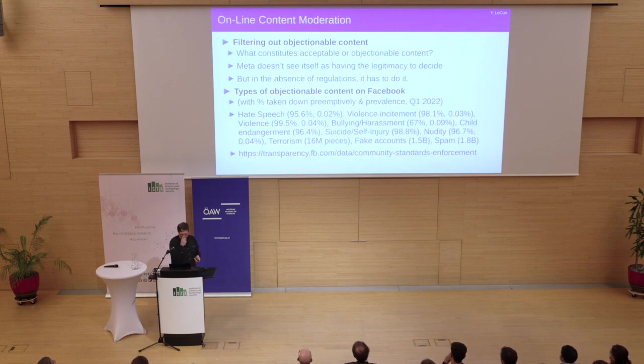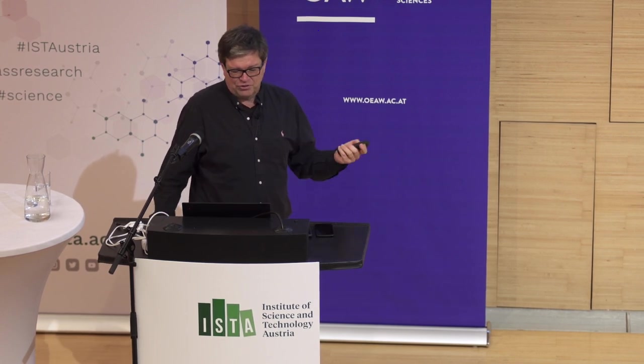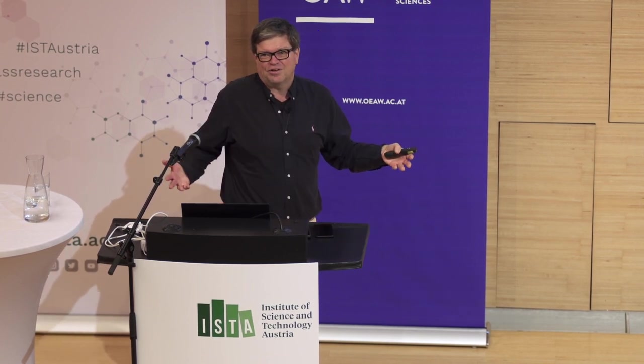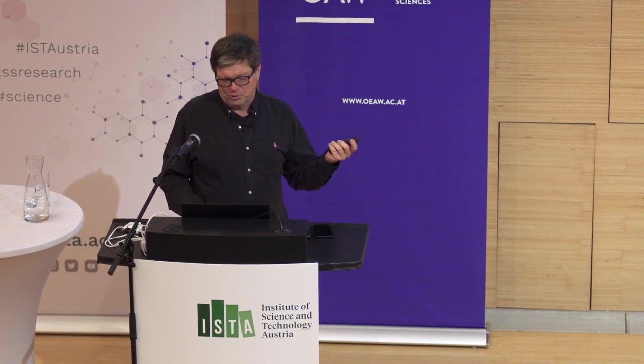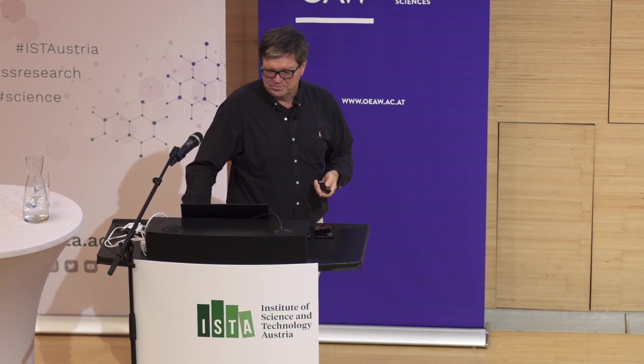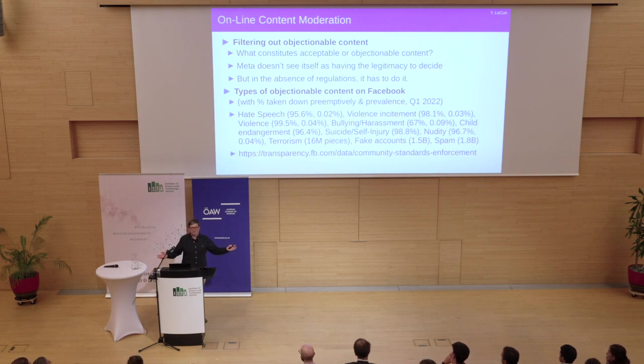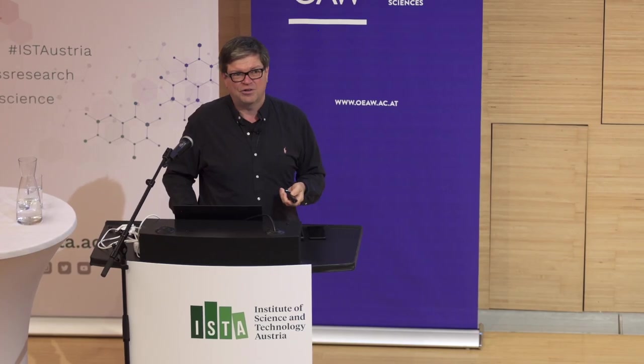Okay, online content moderation, probably the biggest use of deep learning and machine learning today, more generally. So there's two questions really, what constitutes acceptable or objectionable content? And this is a very difficult question that most tech companies actually would like to not have to do, but they have to. So Meta, for example, doesn't see itself as having the legitimacy to decide what is acceptable or not acceptable. But in the absence of regulation, it has to decide by itself. And people may or may not like it. And it depends which country you're in. For example, in European countries, in many European countries, you can't claim that the Holocaust did not exist. That's illegal. Not so in the US. But that actually is taken down. This type of claim is taken down by Facebook worldwide.